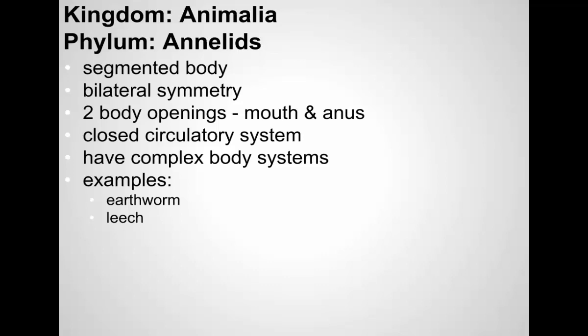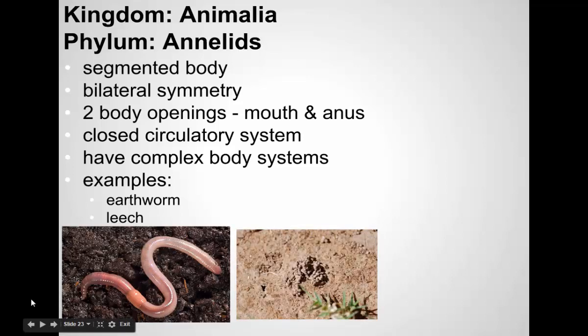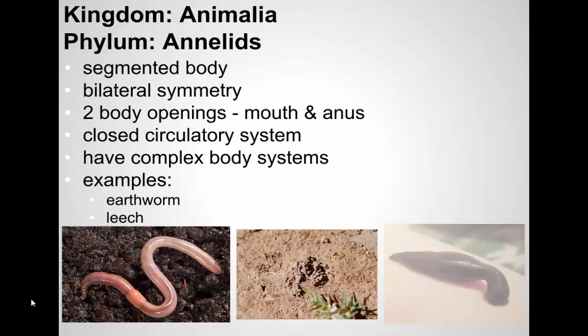We'll finish up with annelids. Annelids are another type of worm — these are the segmented worms. They have bilateral symmetry, two body openings — a mouth and an anus. They are more complex than all the other worms; they have true tissue, organs, and organ systems, making them the most complex of the worms. They include earthworms and leeches. Earthworms are very good for the soil. These are earthworm castings — the waste products of earthworms. Leeches are also included under the annelids, the segmented worms.